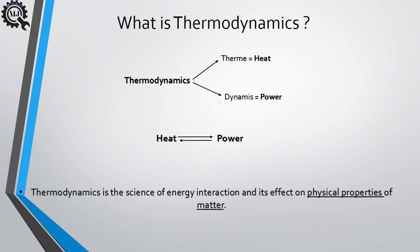Now let's see the formal definition of Thermodynamics. Thermodynamics is a study of energy interaction and its effect on the physical properties of matter. Matter exists in three types: solid, liquid, and gas. When there is energy interaction in any of these three forms of matter, their physical properties change.